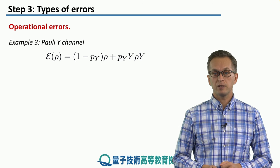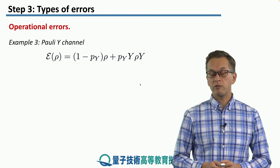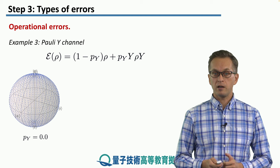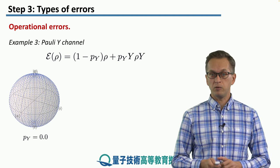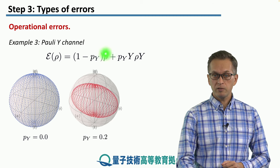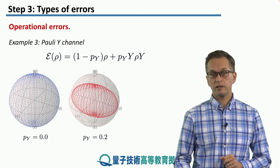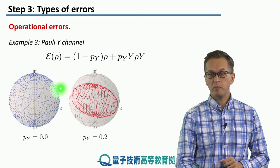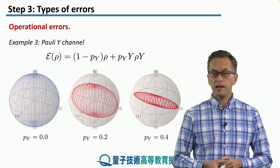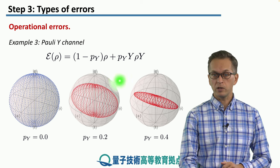Let's see what happens when we apply the Pauli Y channel. Now we have probability of error py, and our state undergoes transformation given by the Pauli Y matrix. Starting with many pure states distributed equally on the Bloch sphere, the zero state and the plus state are affected by this noise channel, but the states plus-i and minus-i are not. Increasing the probability of error py, the state gets more squished towards the y-axis of the Bloch sphere.